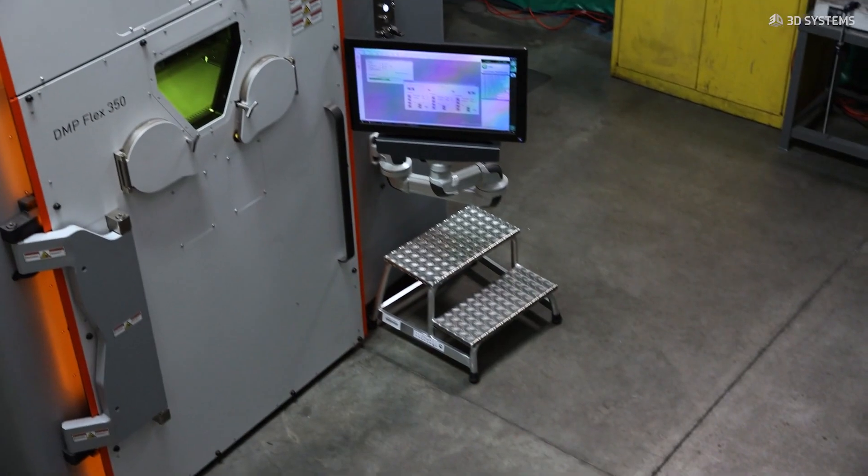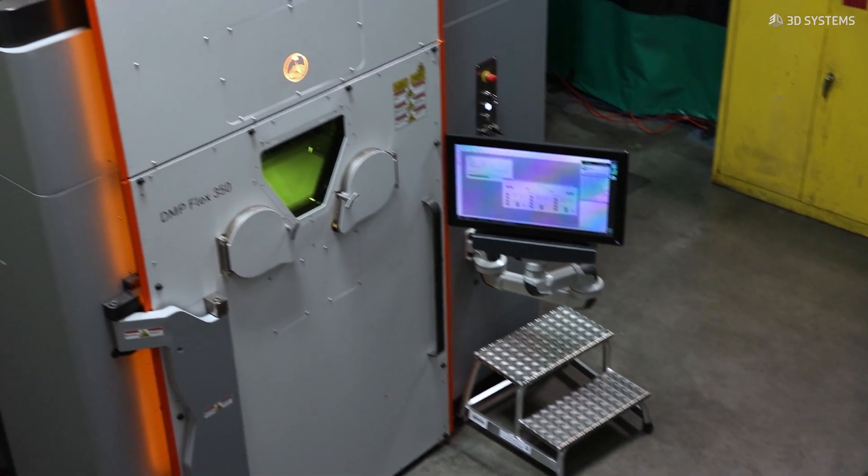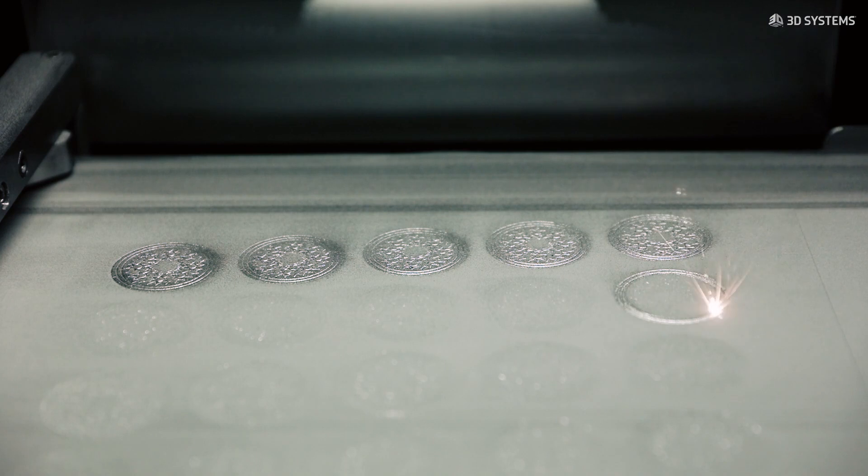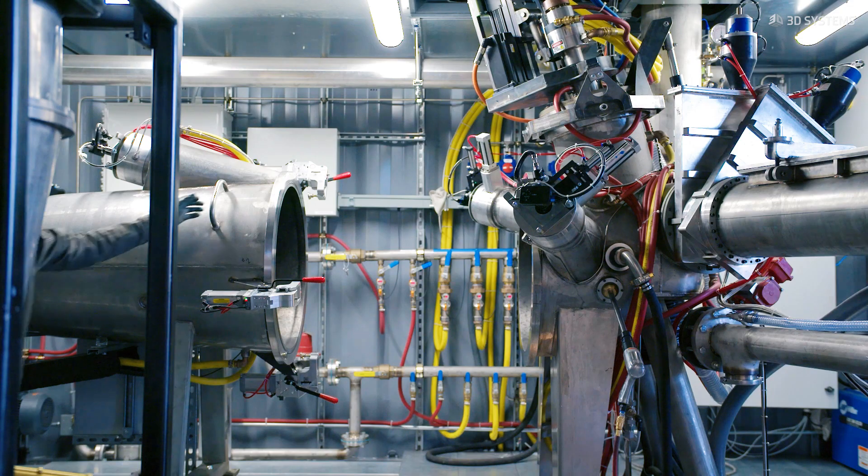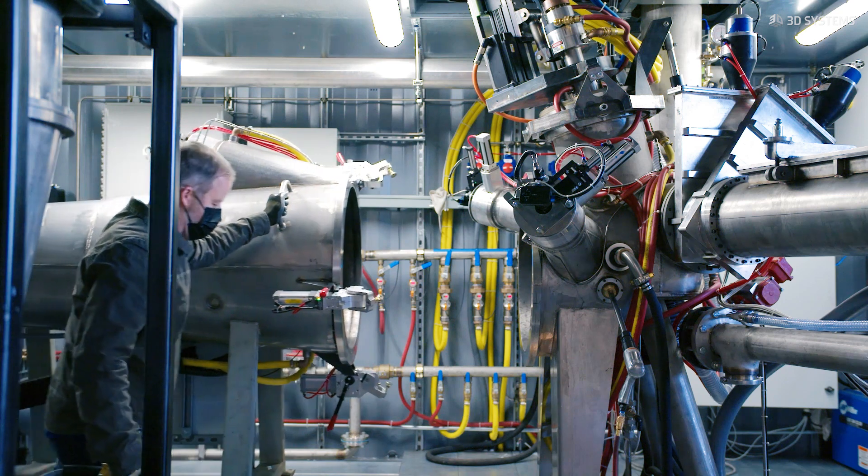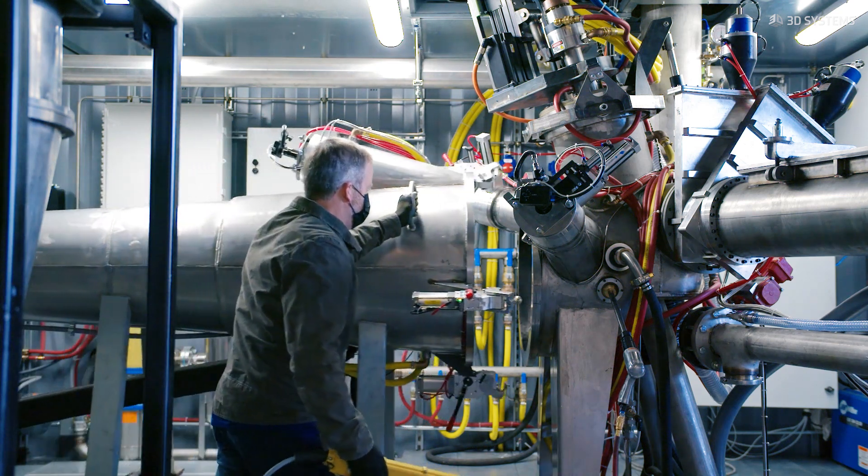With the 3D Systems printer, we're able to get our process down to five parts per million oxygen within the chamber. That means when we're making parts out of titanium, it's not going to be sucking up a bunch of oxygen during the print. We're currently making these parts out of material that we produce on our atomization unit here in-house.